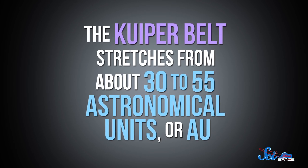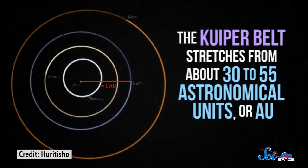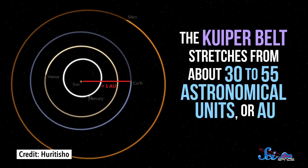The Kuiper Belt stretches from about 30 to 55 astronomical units, or AU. One AU is the average distance from the Earth to the Sun, and astronomers use it to describe large distances. After about 55 AU, the Scattered Disc starts.